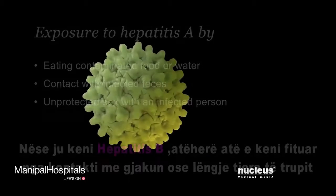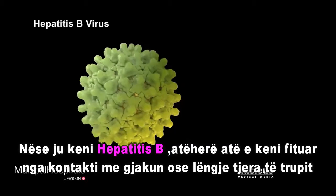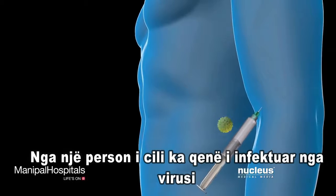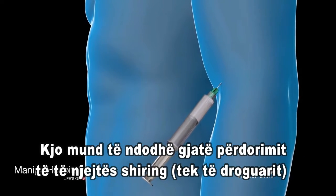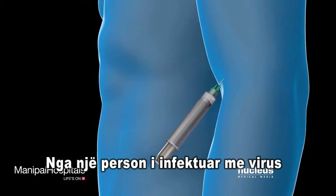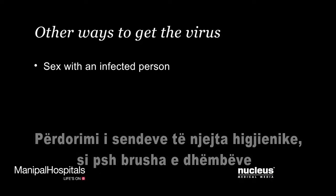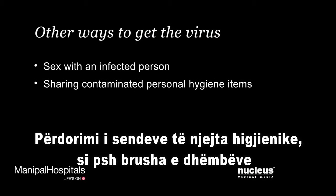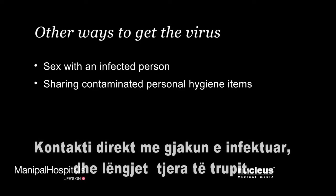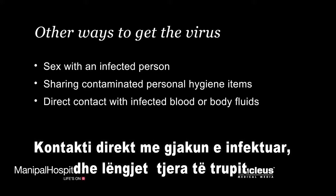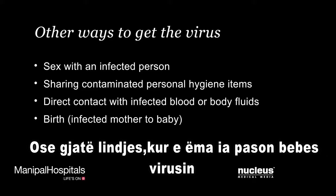If you have hepatitis B, the virus entered your body when you were exposed to the blood or other body fluids from a person infected with the virus. This could have happened from sharing a drug syringe with an infected person, having sex with someone infected by the virus, sharing personal hygiene items such as razors or toothbrushes used by an infected person, direct contact with the blood or body fluids of an infected person, or when a mother passes it to her baby during birth.